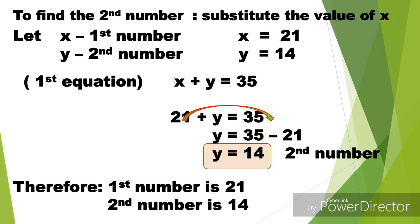To find the second number, substitute lang natin yung value ng x. Let x be the first number, y is the second number. So we can use either of the two equations. This time ang gagamitin ko is yung first equation, which is x plus y equals 35. Substitute ko yung value ng x which is 21. So therefore 21 plus y equals 35. I'll transpose yung 21 to the other side, so positive 21 becomes negative 21. Then 35 minus 21 equals 14. So the value of y is 14, which is the second number. Again, first number is 21 and the second number is 14.